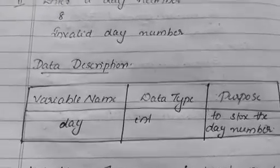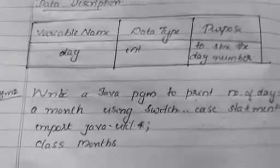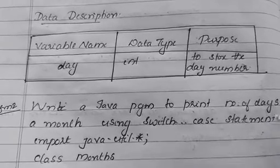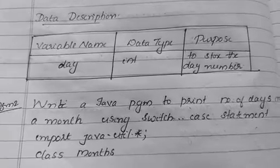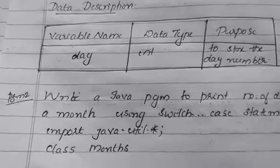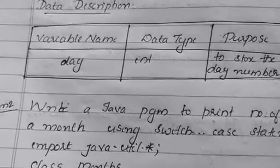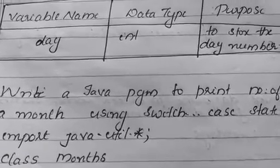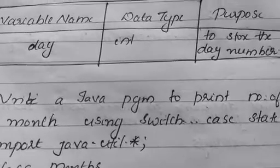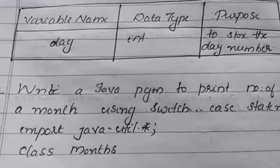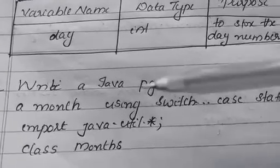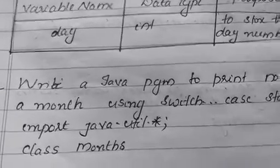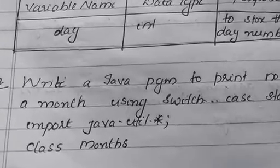Let's see one more program based on switch case: write a Java program to print the number of days in a month using the switch case statement. All months are from January to December. January is 1, February is 2, up to December which is 12. We will use the Scanner class for input.